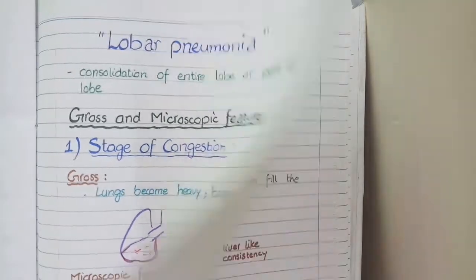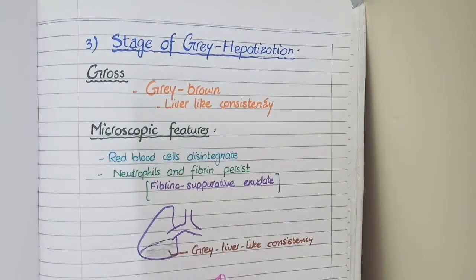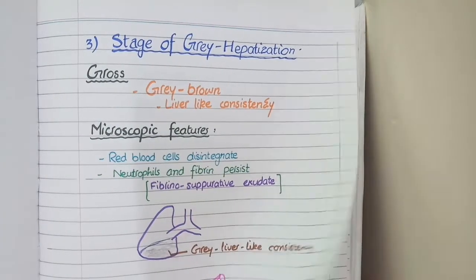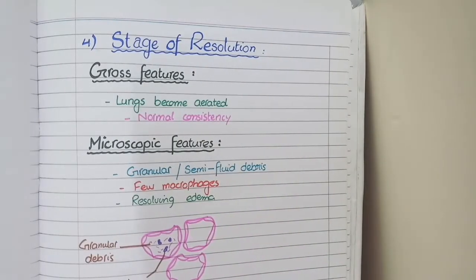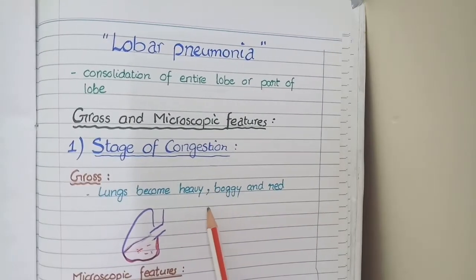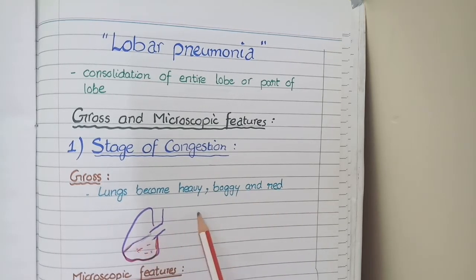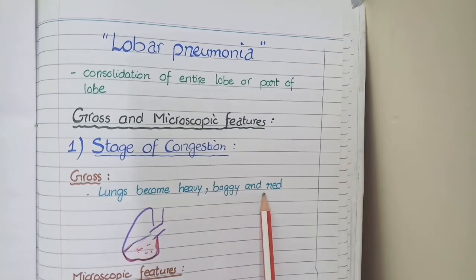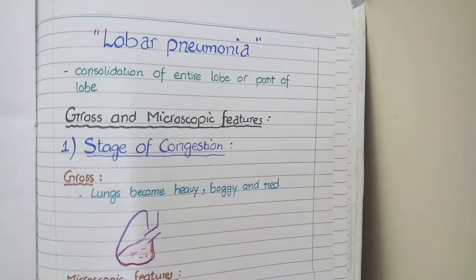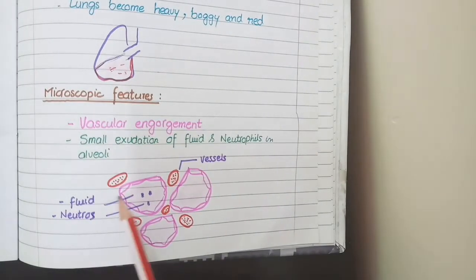The four stages are: stage of congestion, stage of red hepatization, stage of grey hepatization, and stage of resolution. The first stage is the stage of congestion. The gross features in this stage include congestion of the lungs, which makes the lungs slightly red. A small amount of edematous fluid also leaks into the alveoli, so the lungs become heavy, boggy, and red. On microscopy, you see vascular engorgement, as shown in this diagram.